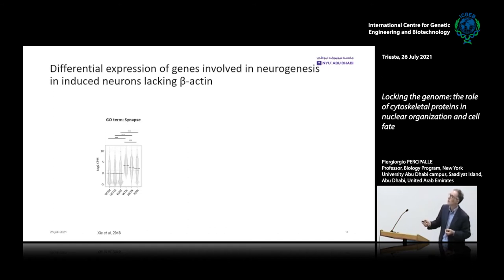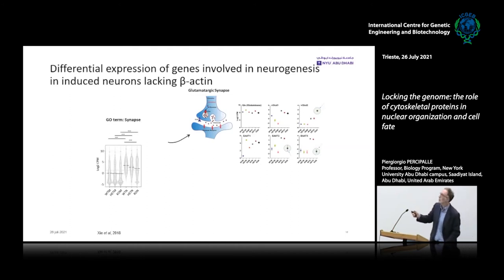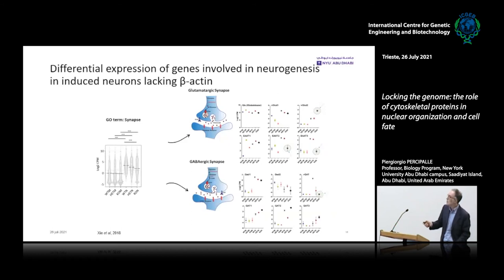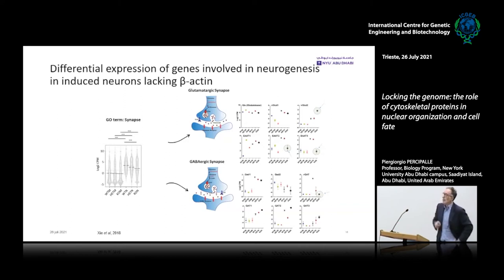Looking more closely at the synapse GO-term, genes involved in glutamatergic synapses show that the vesicular glutamate transporter is upregulated, but the EAAT receptor and the glutamatergic cycle are downregulated. For GABAergic synapses, the opposite occurs — the vesicular GABA transporter is downregulated. This suggests a switch between excitatory and inhibitory neuron types, a switch in the subtype.